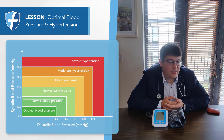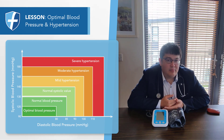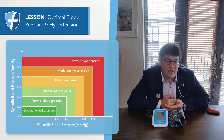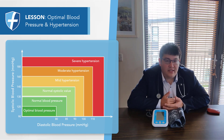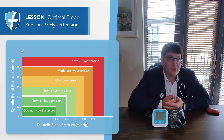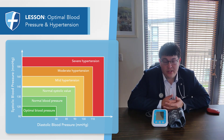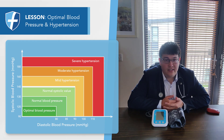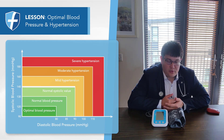Prehypertension is having a systolic blood pressure of between 120 and 139 or a diastolic blood pressure between 80 and 89. Grade 1 hypertension is having a systolic blood pressure between 140 and 159 or a diastolic blood pressure between 90 and 99.